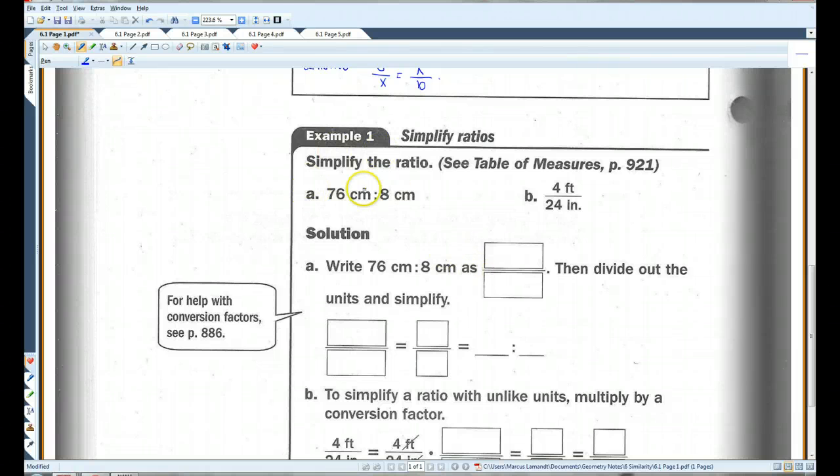Alright, example one. Simplify the ratio 76 to 8. We're going to write 76 centimeters to 8 centimeters like this. I'll write it down here also, 76 to 8. The centimeters cancel out.